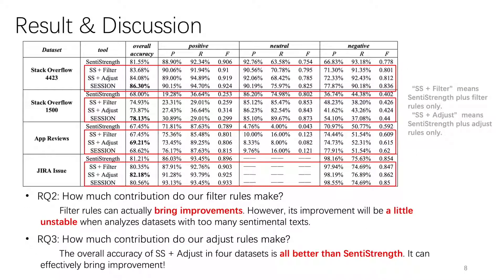For RQ2 and RQ3, the data is shown in this table. Our overall conclusion is that our filter rules and adjust rules are complementary in improving the performance of SESTION, meaning that both of them are an essential part of our approach.